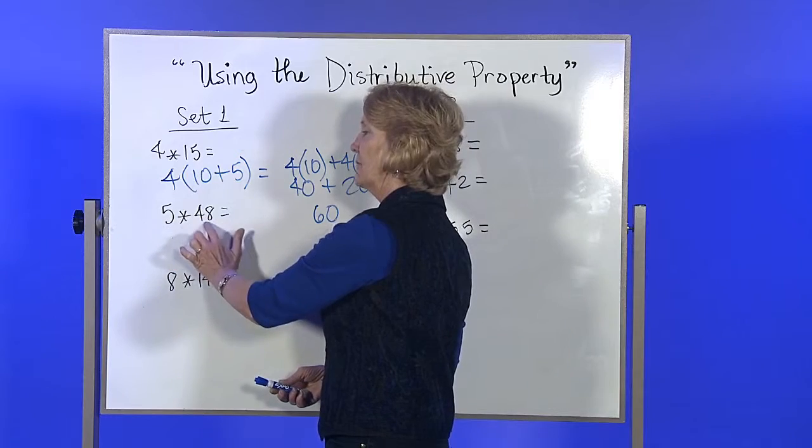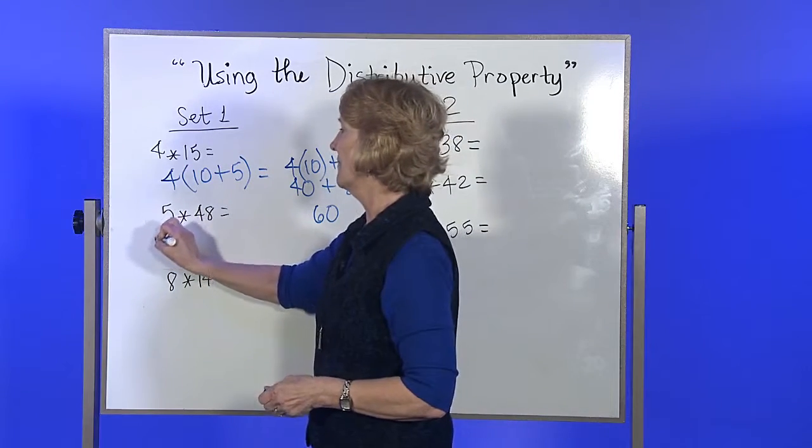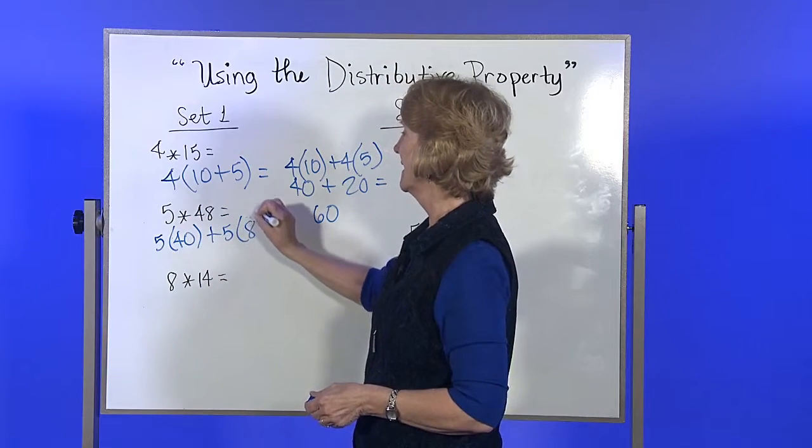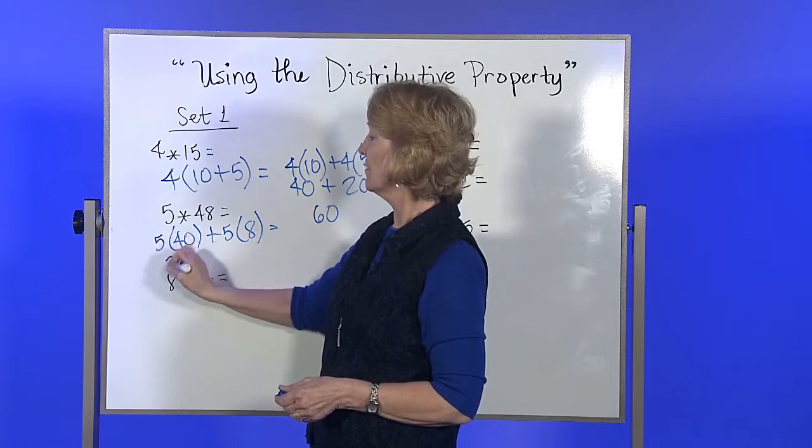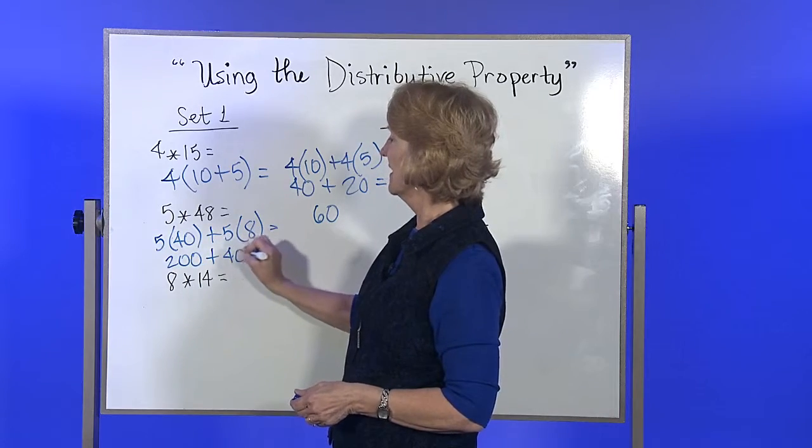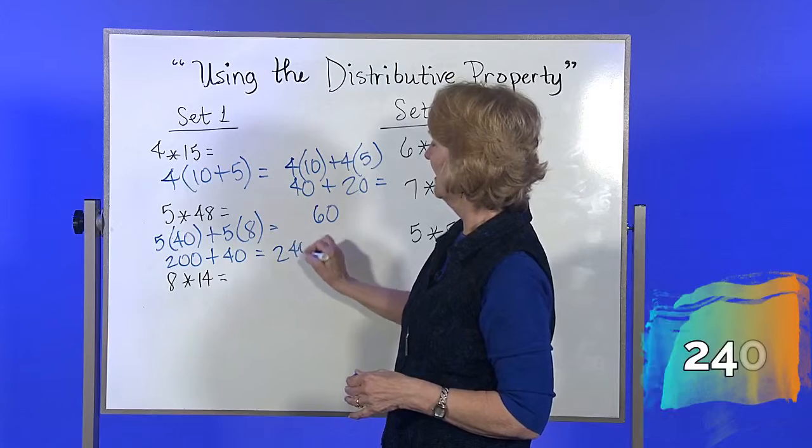This one's 5 times 48. So 5 times 40 plus 8, you get 5 times the 40 plus 5 times the 8. 5 times 4 is 20, put another 0 on it, you get 200. 5 times 8 is 40. 200 plus 40, 240. Easy.